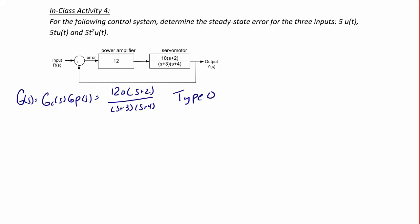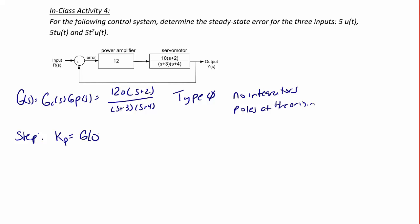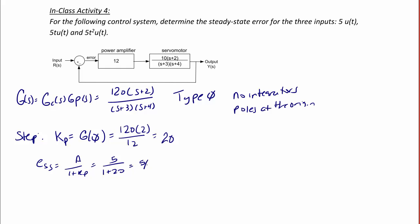This is a type 0 system because there are no integrators or poles at the origin. For the step input, the position error constant KP is G(0), which is 120 times 2 divided by 12, so KP equals 20. The error is equal to A over 1 plus KP, which is 5 over 1 plus 20, so the error for a step is 5 over 21.